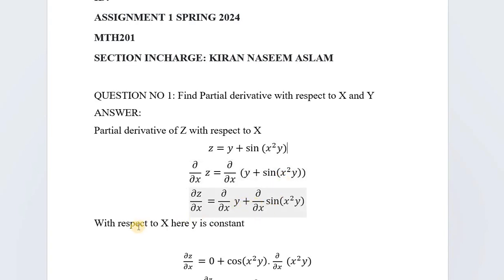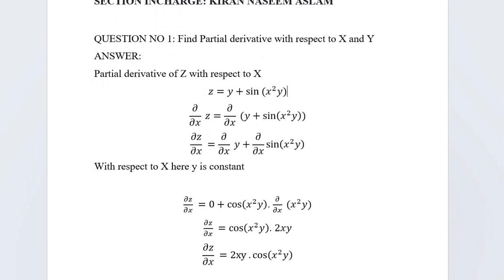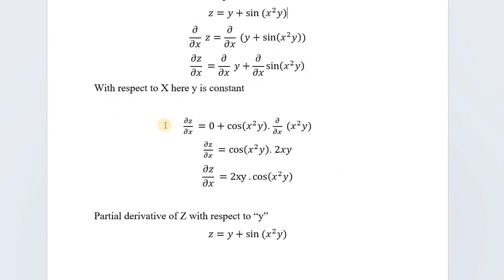We write them separately. Now, when we take the derivative with respect to x, y becomes constant. So ∂z/∂x: since we are differentiating with respect to x, y is constant, and the derivative of a constant is 0. Then next, the derivative of sin is cos x.